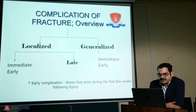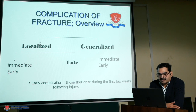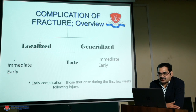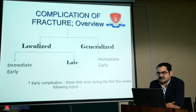We can classify complications on the basis of locality. Complications could be localized or generalized. Localized means they are restricted to the injured limb or the site of fracture. Generalized means involvement of multiple systems, apart from the musculoskeletal system.